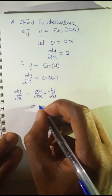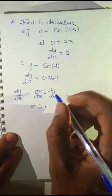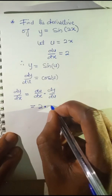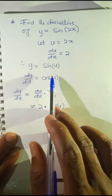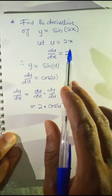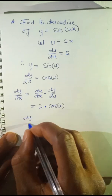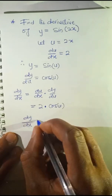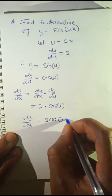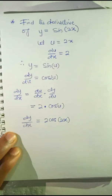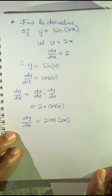du/dx is 2, multiplied by dy/du which is cos u. Since u is equal to 2x, substitute back. Therefore, finally, dy/dx is going to be 2 cos 2x. So 2 cos 2x is the derivative of sine 2x.